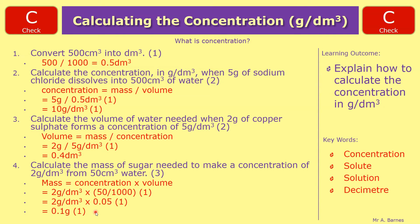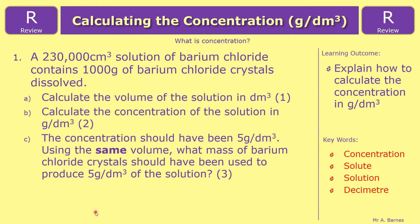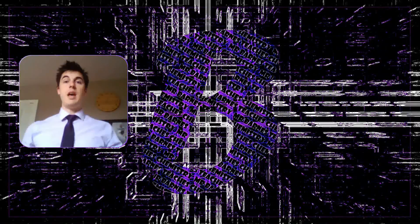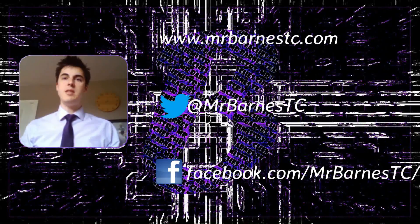That about sums up this video. Let's move on to the review question: calculate the volume of the solution in decimetres cubed for 1 mark; calculate the concentration in grams per decimetre cubed for 2 marks; and using a volume of 230,000 centimetres cubed, what mass of barium chloride crystals should have been used to produce 5 grams per decimetre cubed? Hopefully you've enjoyed the video — click the subscribe button and visit mrfarnesteachchemistry.com for more.